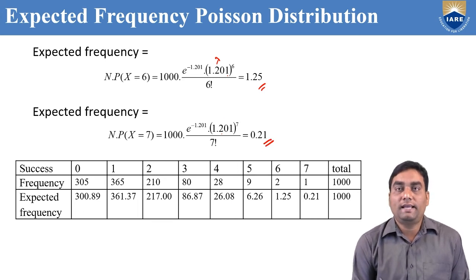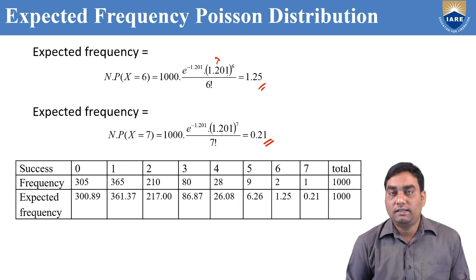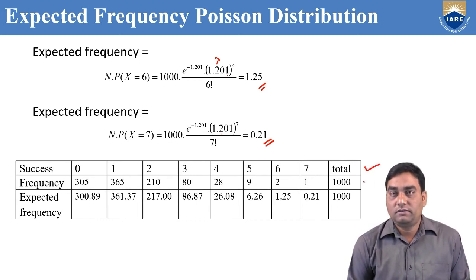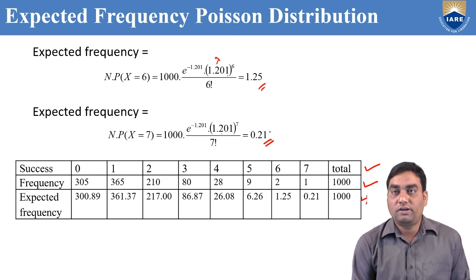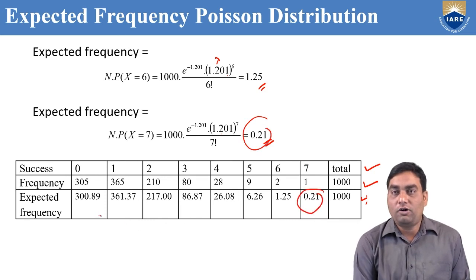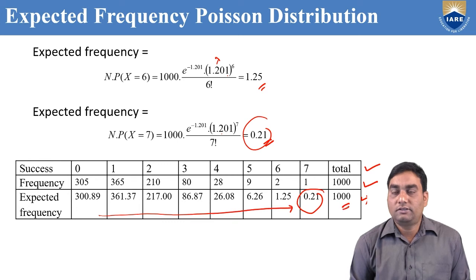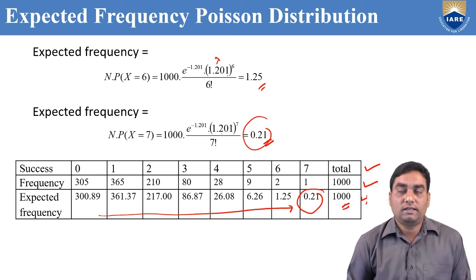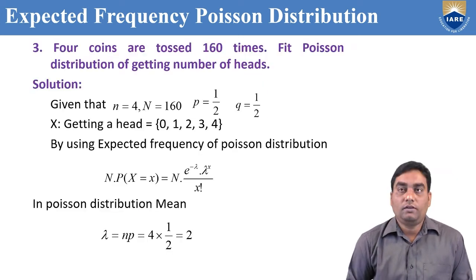After getting all the expected frequencies, we write them in the table alongside the given successes and frequencies for x = 0 to 7. For x = 7, expected frequency is 0.21. Adding all expected frequencies gives the total of 1000.